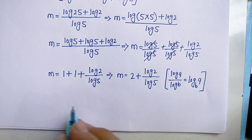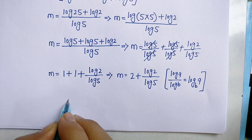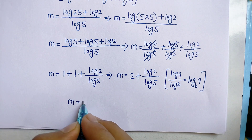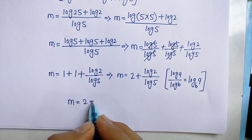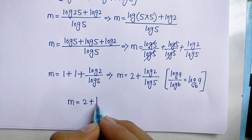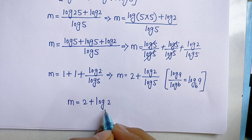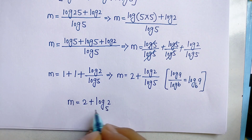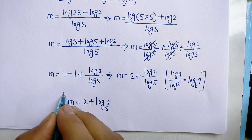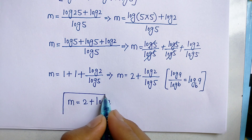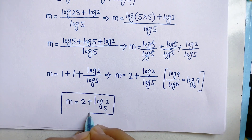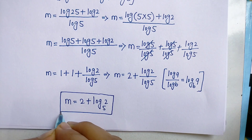By using this formula, we get m is equal to 2 plus log base 5 of 2. This is the value of m — our final answer.